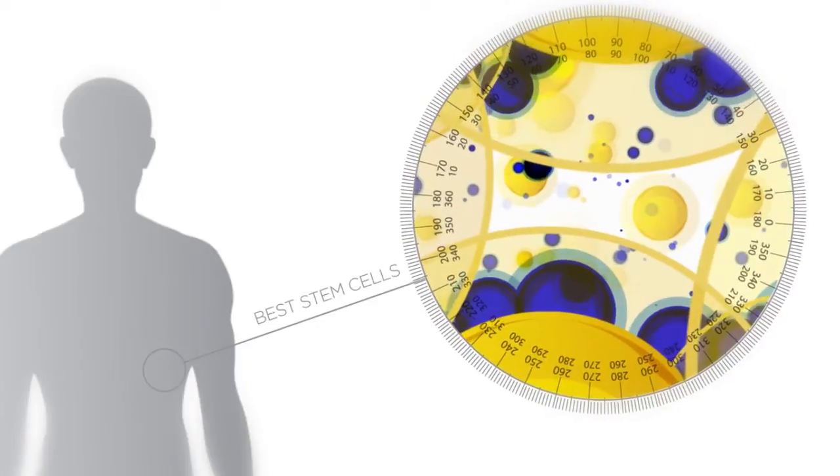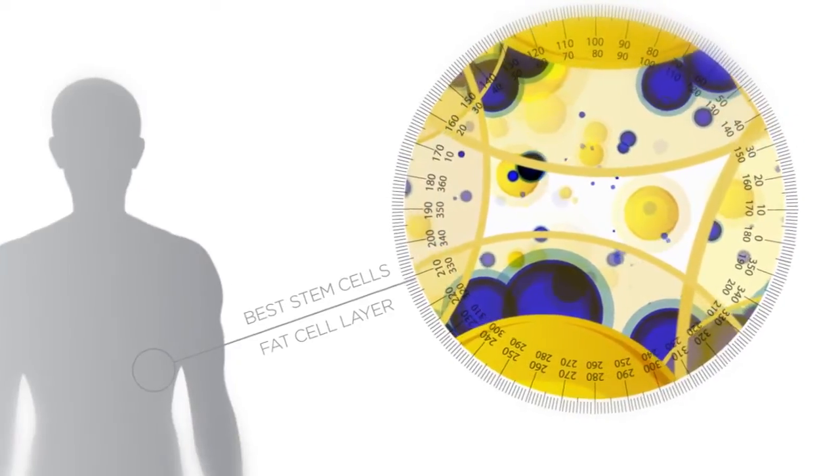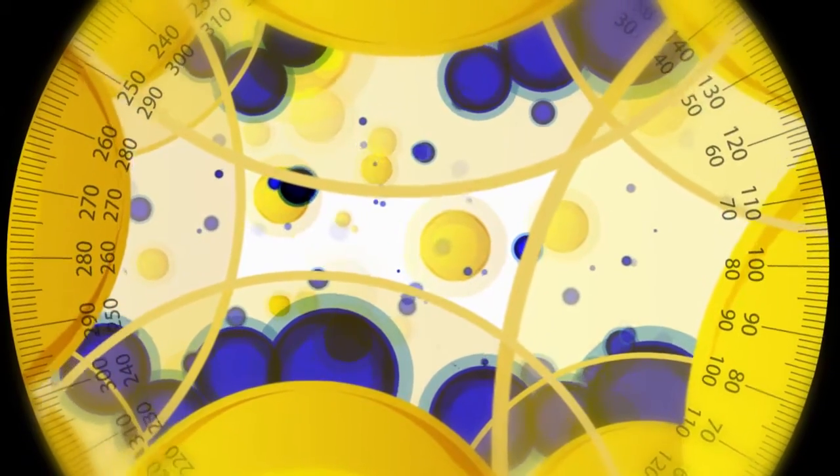The process begins with the search for the best stem cells in the human body. The stem cells are found within the body's fat layer. By using a sterile and specialized syringe, doctors extract a mixture of fatty tissue and a group of healthy stem cells.